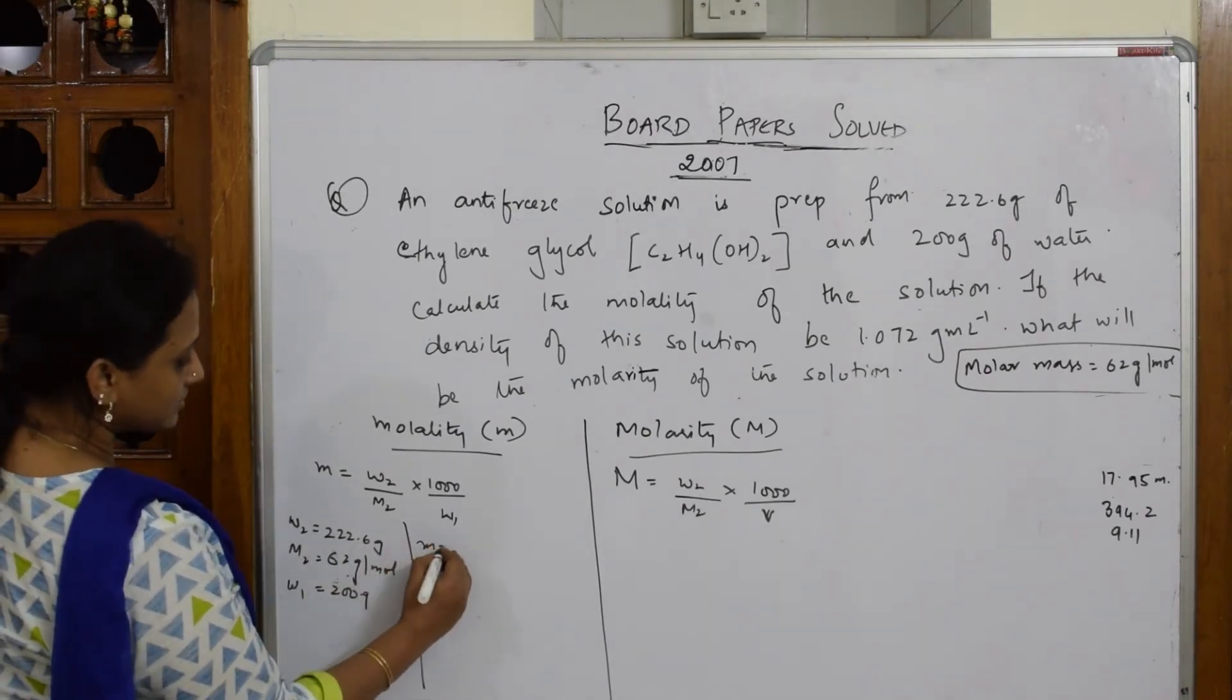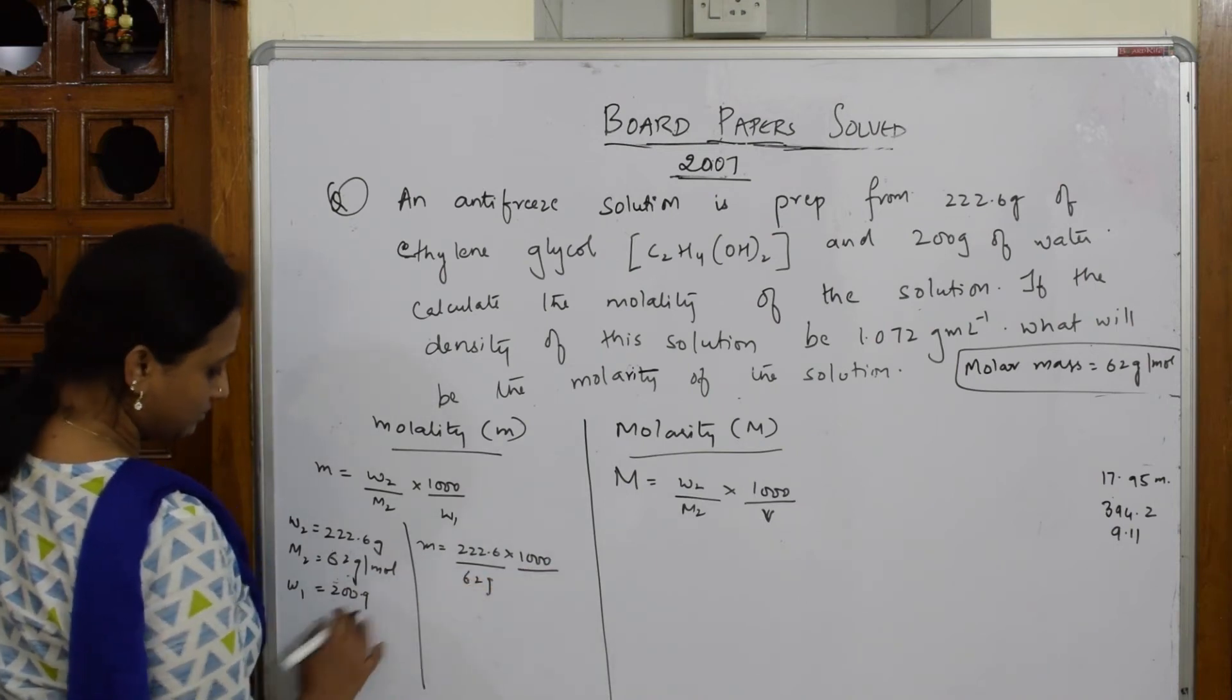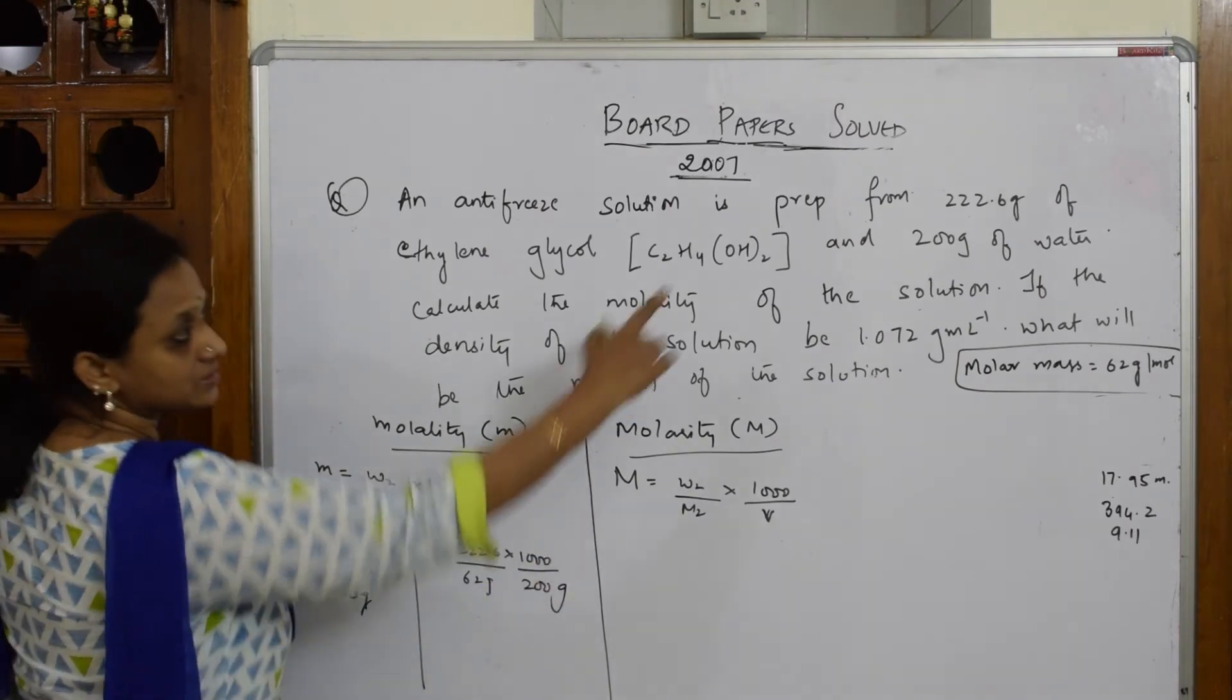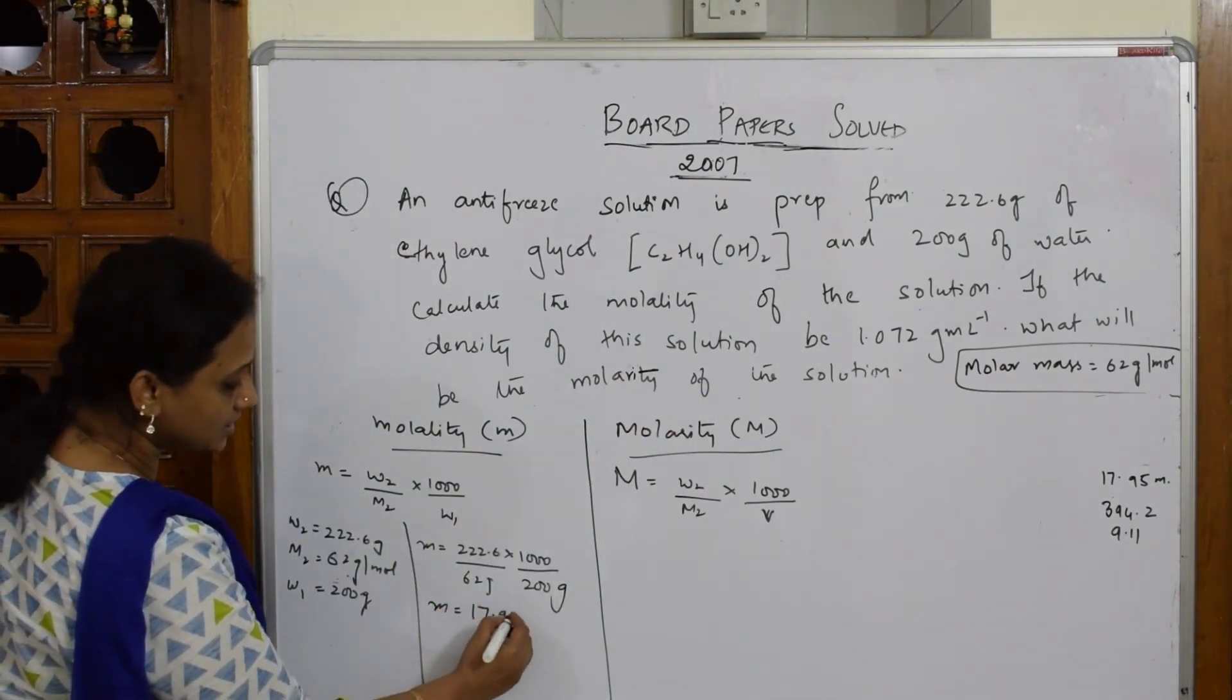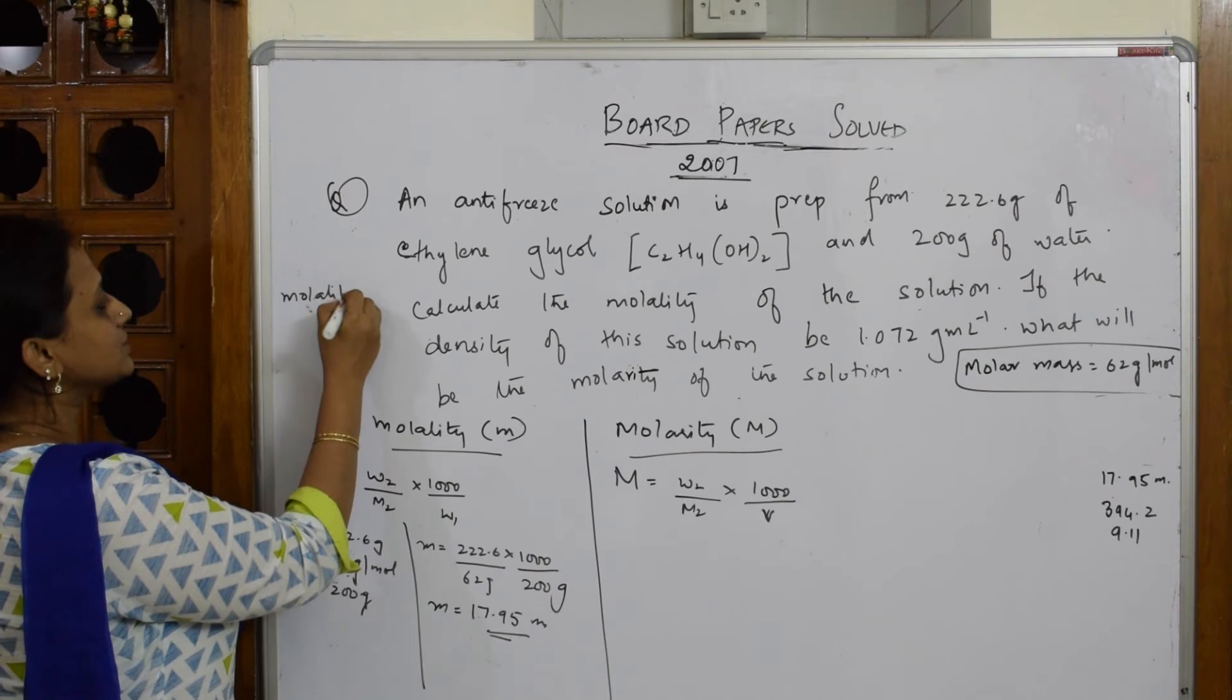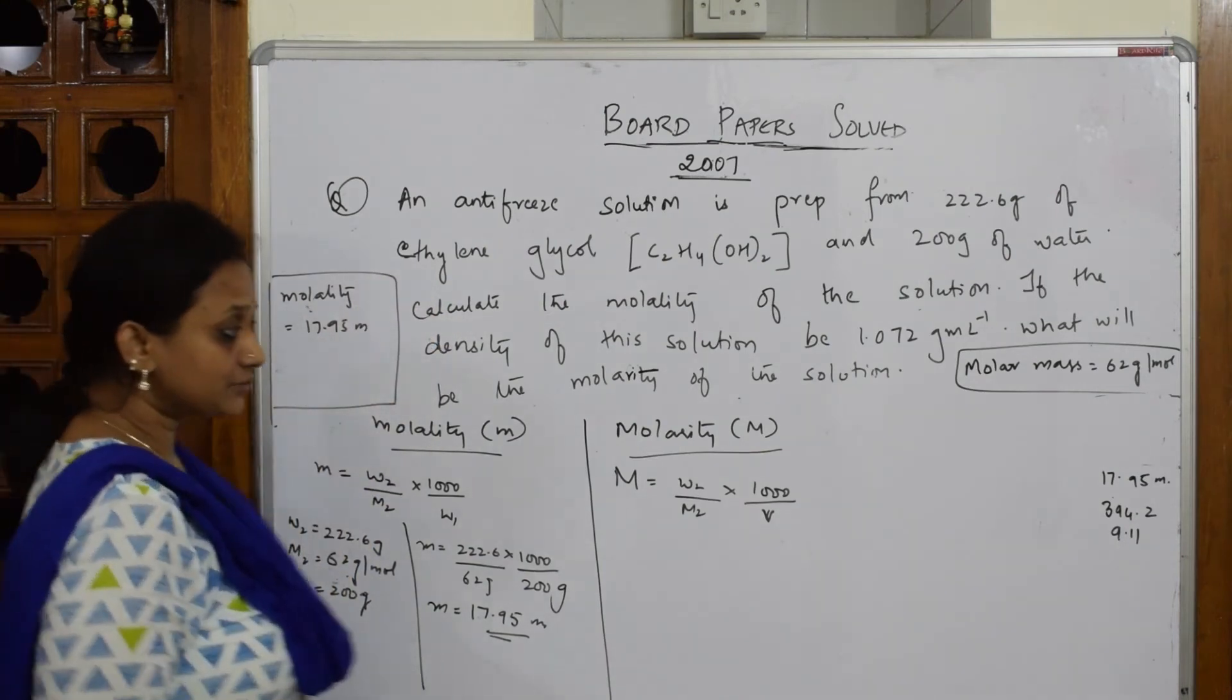What do you get? Molality equals 222.6 into 1000 by m2 is 62 by w1 is 200 grams. It's only 200, not 200.9. When I solve, I get an answer of 17.95 molar. So the first answer, molality, is equal to 17.59 molar solution. This is your first answer, this is done.